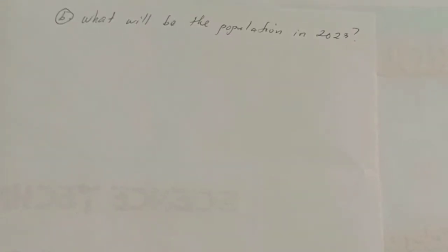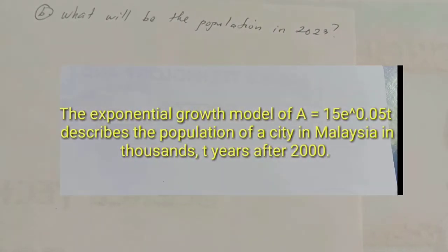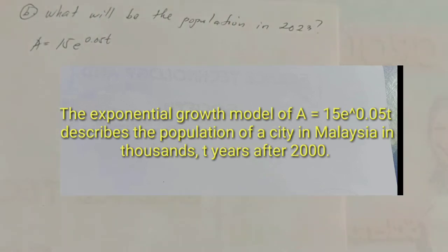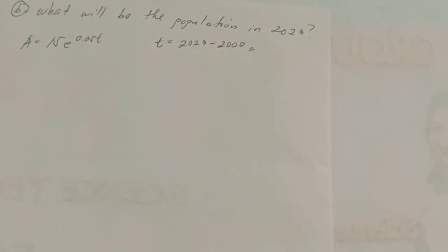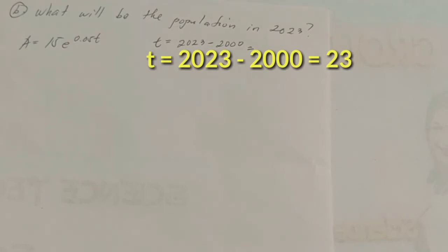Next, let's solve the second question. What will be the population in 2023? Read the problem again. What will be the value of t? Copy the exponential growth model from the problem. A equals 15e raised to 0.05 times t. To get the value of t, just simply subtract 2023 and 2000. 2023 minus 2000 equals 23. Substitute the values.